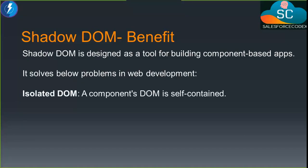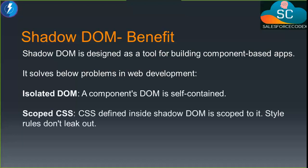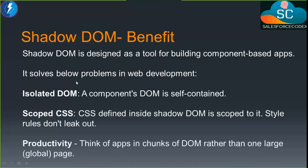Just like other web pages, we can inject or use multiple libraries. Whatever element we have created using Shadow DOM will not interfere with other libraries we have included — so it helps us create an isolated DOM. The second benefit is Scoped CSS. CSS defined inside a Shadow DOM is scoped to it only. That element stays within its boundary, and the style rules don't leak out. Whatever style we have written in one element will not impact another element.